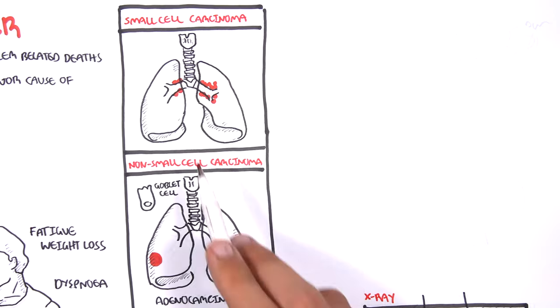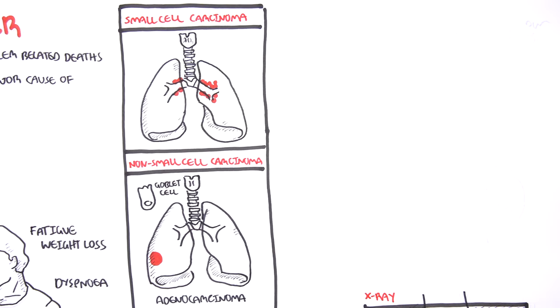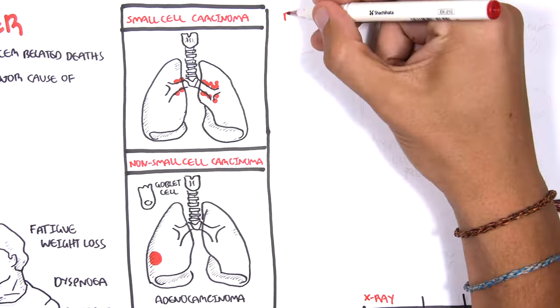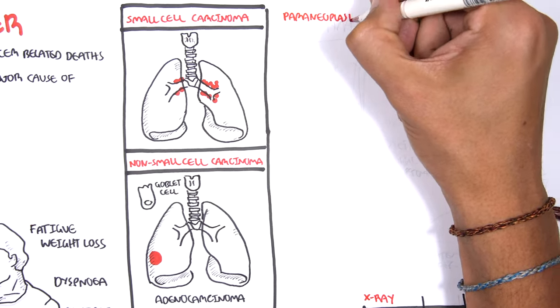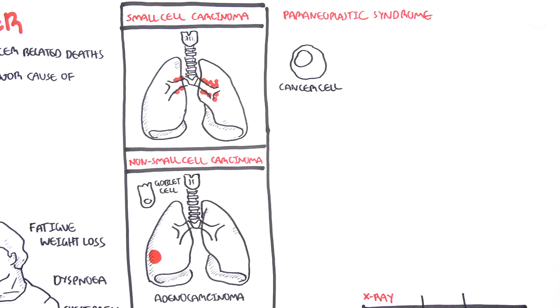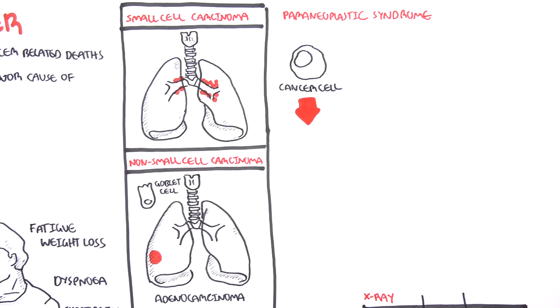Now some types of lung cancer can cause the cells of the lung to become neuroendocrine cells. The formation of neuroendocrine cells can result in a phenomenon known as paraneoplastic syndrome. So here we have a cancer cell, which can become a neuroendocrine cancer cell.